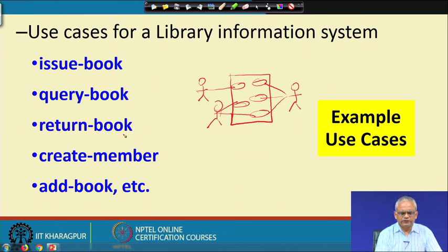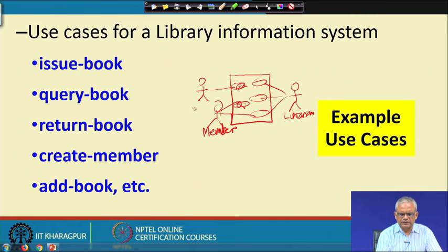For this example, we will write issue book, query book, return book, etc. as the functionality for the member, and for the librarian: create member, add book, delete member record, etc. We get a very simple and impressive view of a system where just by looking at the diagram, we can relate what the system has to offer to different categories of users — who the users are and what are the different categories of functions they can perform using the system.